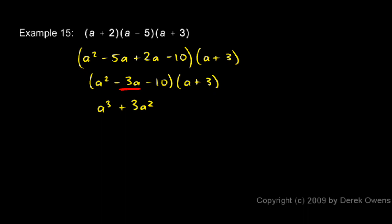Now I'll look at the negative 3a. I want to multiply the negative 3a times the a. That gives me negative 3a squared. And then I'll look at the negative 10. I have to multiply the negative 10 by each of those. So negative 10 times a gives me negative 10a. And negative 10 times 3 gives me negative 30.